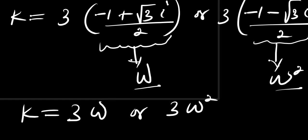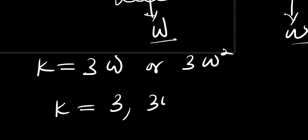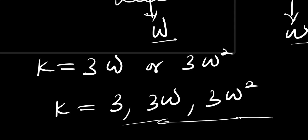That means we can rewrite our solution as k equals 3 times omega or 3 times omega squared. So therefore the three solutions are: k equals 3, then we have 3 times omega, then we have 3 times omega squared. So these are the three solutions.